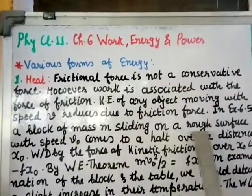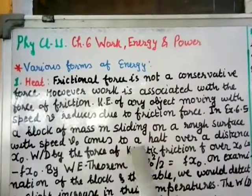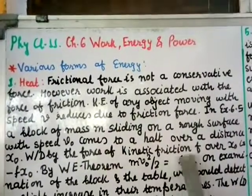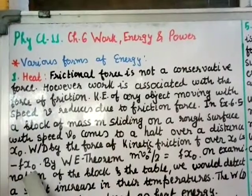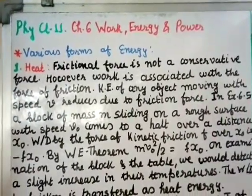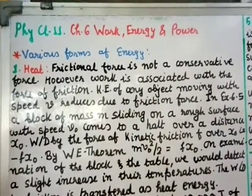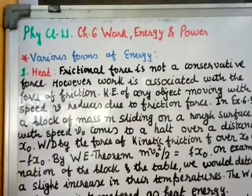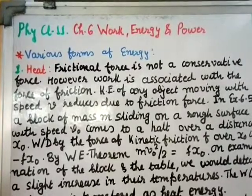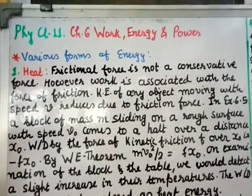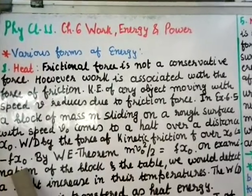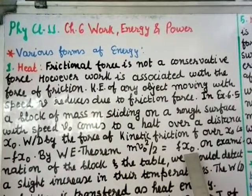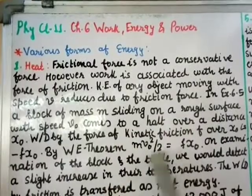In Example 6.5, a block of mass m slides on a rough surface with speed V₀ and comes to a halt over a distance x₀. The work done by the force of kinetic friction F over x₀ is minus F·x₀. By the work-energy theorem: ½mV₀² = F·x₀, where the left side is kinetic energy and the right side is the work done.